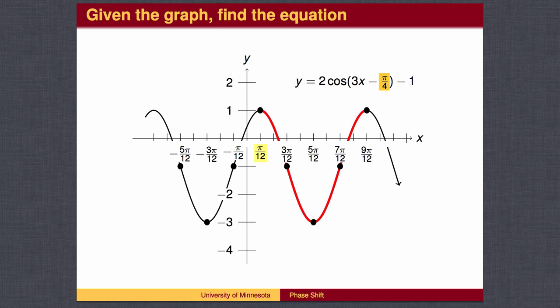Finally, the phase shift is pi over 12. The phase shift is the value of x that makes the angle 0. The angle is 3x plus c, so we have 3x plus c equals 0, and the x value should be pi over 12. Solving 3 times pi over 12 plus c equals 0 gives c equal to negative pi over 4. This is one possible way to write the equation for the graph.